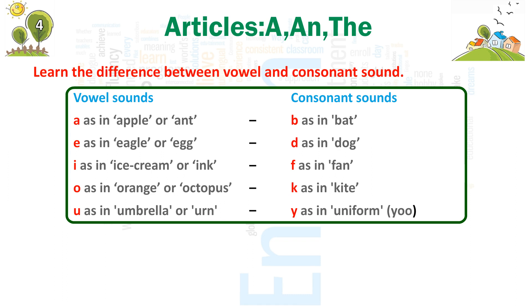Vowel sounds: A as in apple or ant. E as in eagle or egg. I as in ice cream or ink. O as in orange or octopus. U as in umbrella or urn.